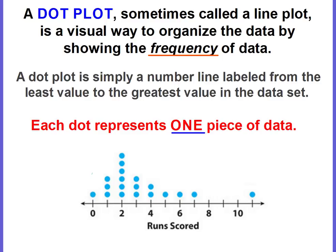Each dot represents one piece of data. So if we look at our example here, the runs scored — the number line represents the number of runs. Each dot represents how many times that number of runs was scored. So five runs — this is five right here — only happened one time because there's one dot. But three runs scored happened three times because there are three dots above the three. So the number of runs scored is represented on the number line, and how many times that happened is represented by the dots above the numbers.